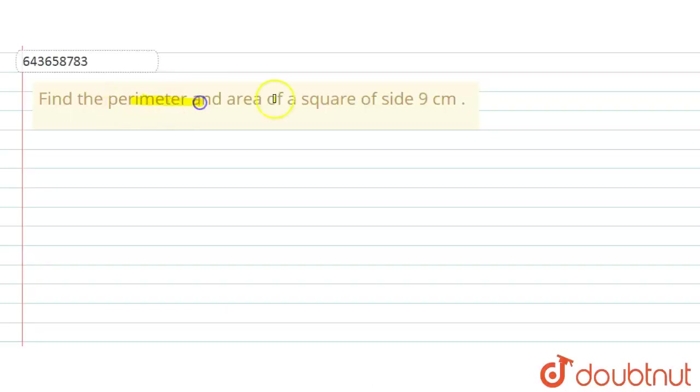find the perimeter and the area of a square of side 9 centimeter. Okay, so here given as side of a square, 9 centimeter. Okay, so as we know that, first of all we will calculate perimeter of square.